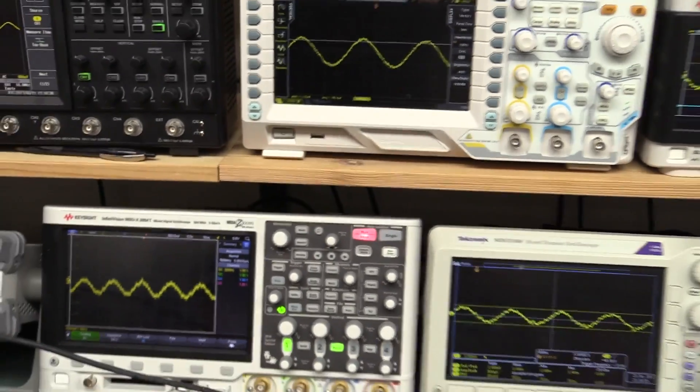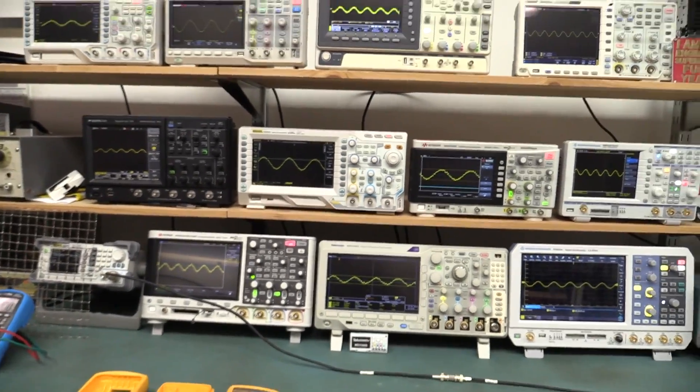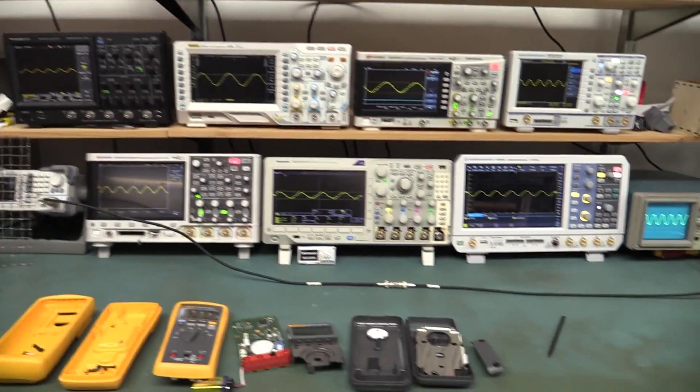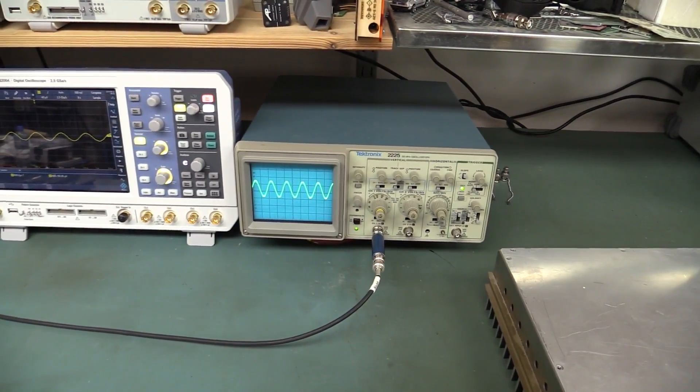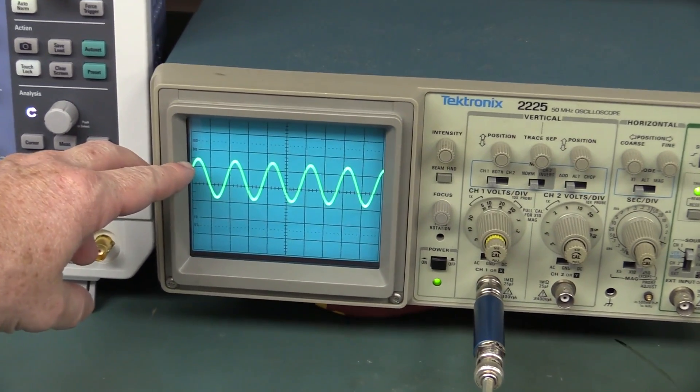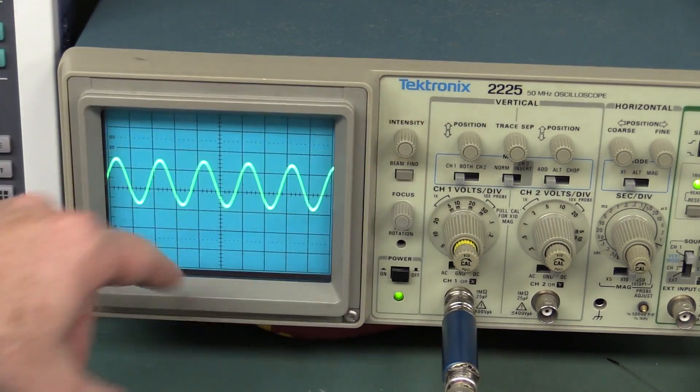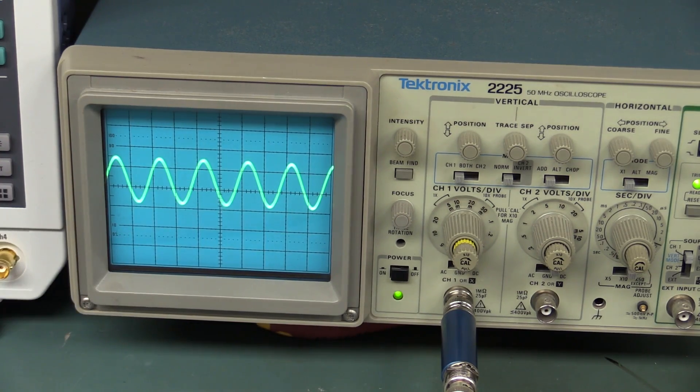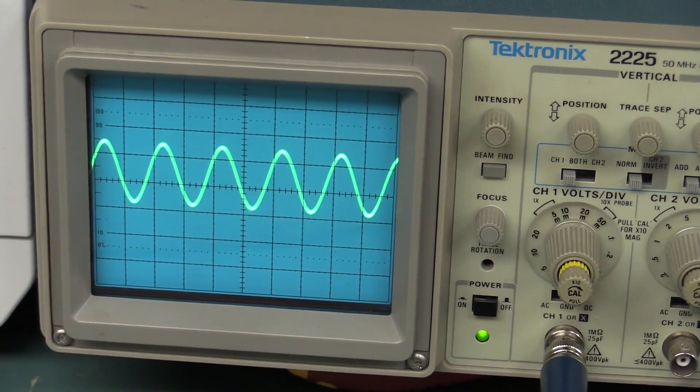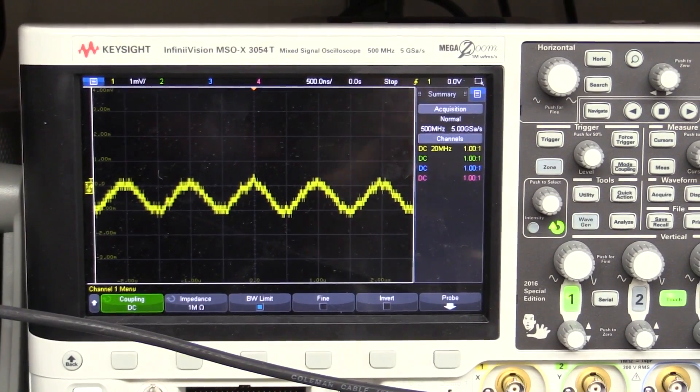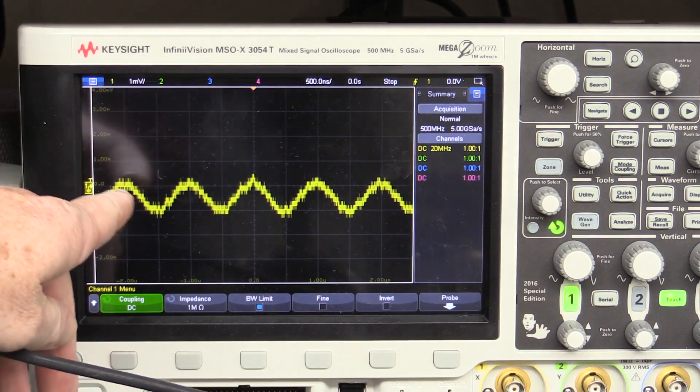Now, it wouldn't be a thousand video if we didn't have a whole bunch of scopes. Let's do a quick review comparison. I'm generating a 500 microvolt RMS signal. We've got the classic Tektronix 2225 analog scope with 500 microvolt per division range. And there's the input signal. Let's actually compare this. We're comparing the noise across several different scopes.